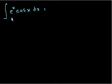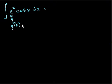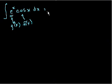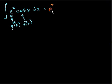Whenever I do integration by parts, I always like to assume that e to the x is g prime of x, because e to the x literally doesn't change when you differentiate or integrate. So let's assume e to the x is g prime of x and cosine of x is f of x. Integration by parts says we take the original functions g of x and f of x. If this is g prime of x, then g of x — the antiderivative of e to the x — is just e to the x.